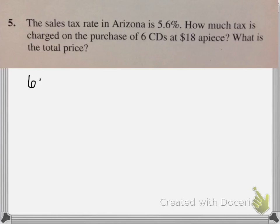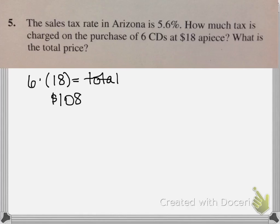The first thing we have to find is the total purchase price, because we have 6 CDs at $18 a piece. So 6 times $18 gives us $108 — this is the total amount before tax. This doesn't answer either question yet, since we still need the tax amount and the total price, but we have to start here before we can calculate the tax.